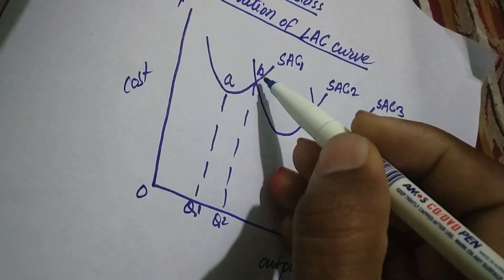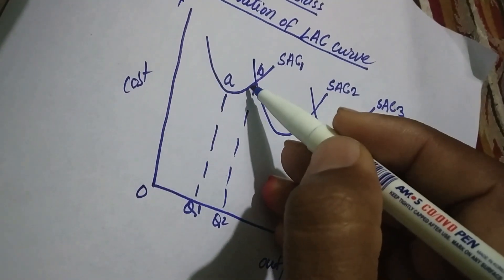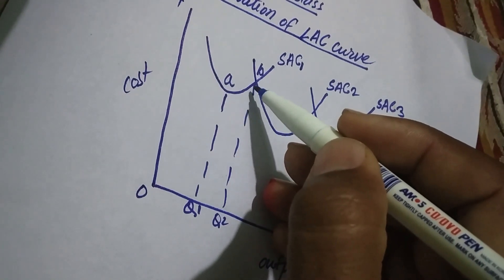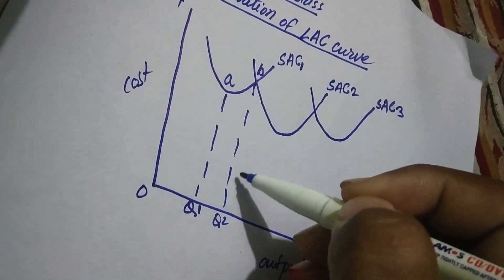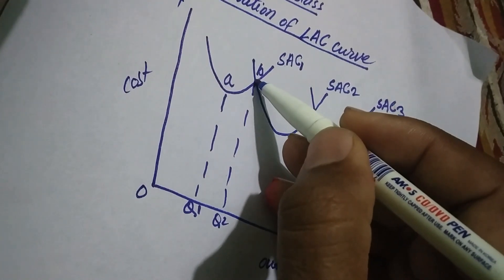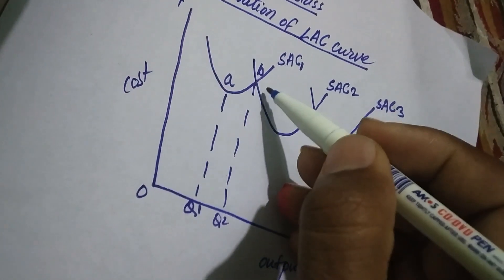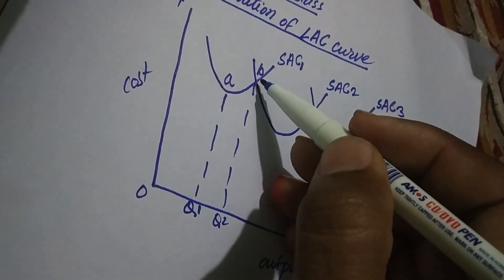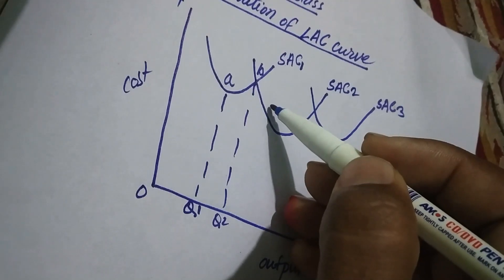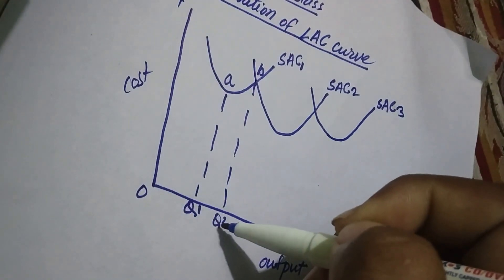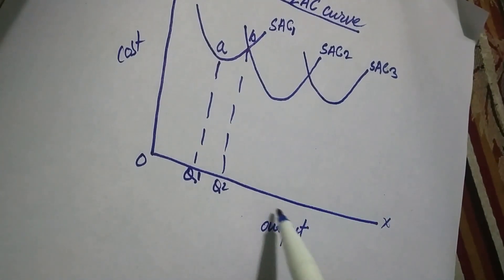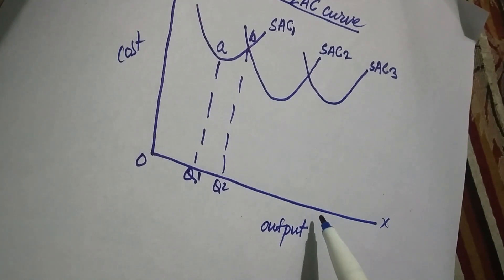For the use of this first size of plant, and even if the firm installs a new plant, for the production of OQ2 level of output the per unit production cost is equal to BQ2. That is why the firm can either use this first size of plant or this medium size of plant for the production of OQ2 level of output.